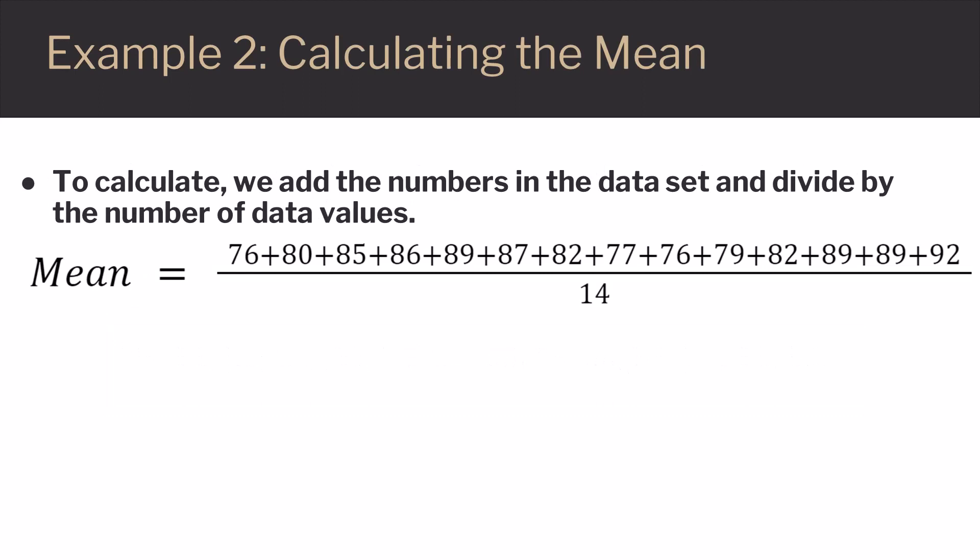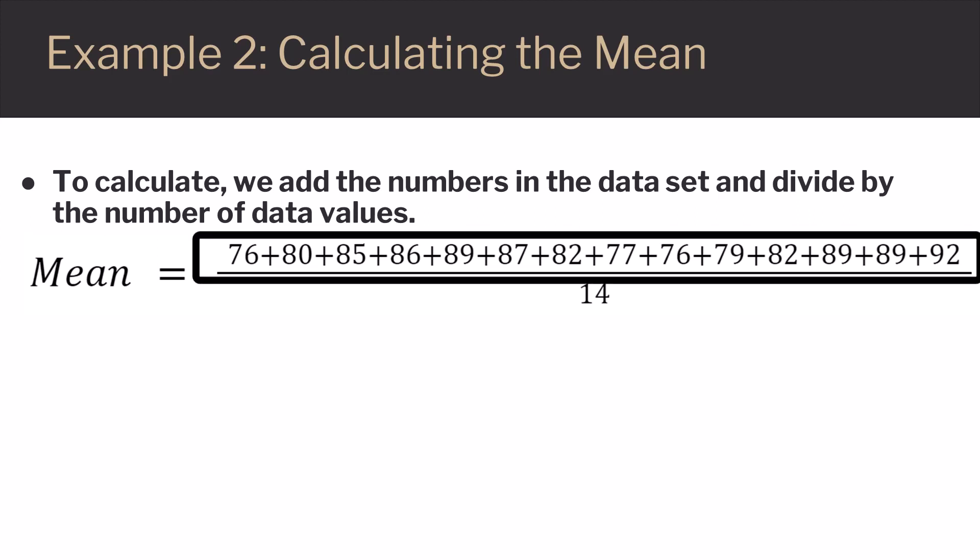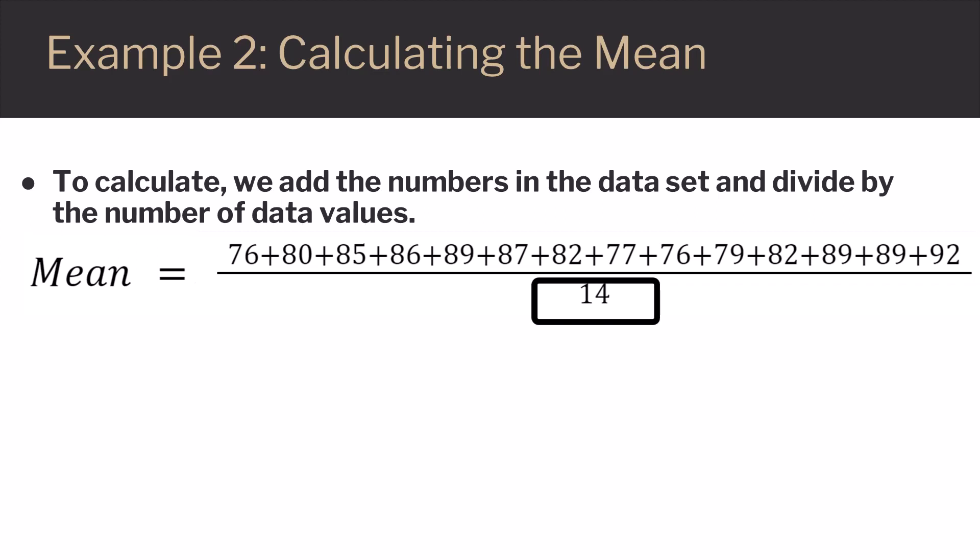To calculate the mean, we're going to add the numbers in the data set, and then divide by the number of data we have. You see on the top, you add up all the numbers. We're going to be dividing by 14, because we have 14 data values.